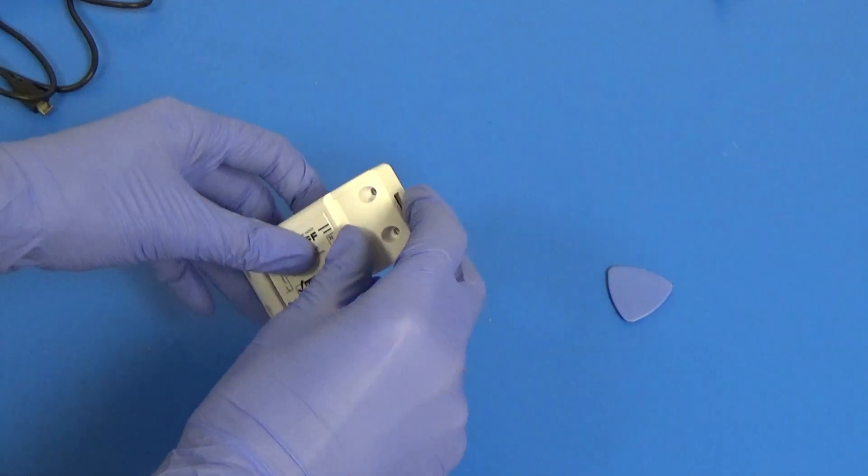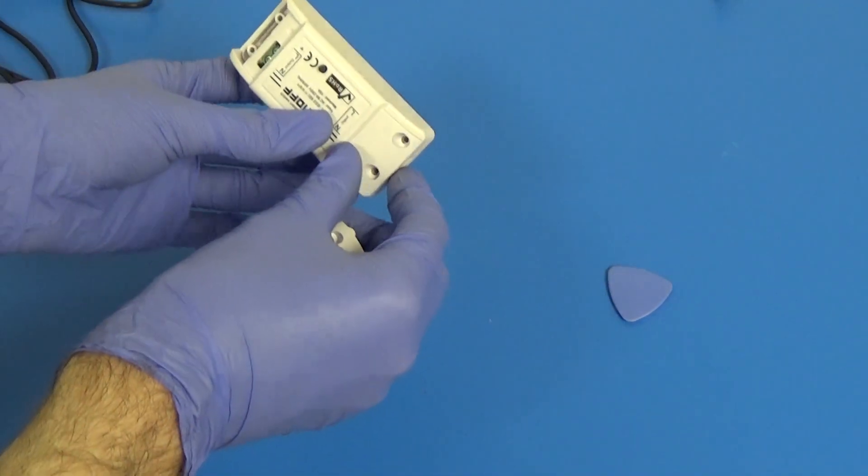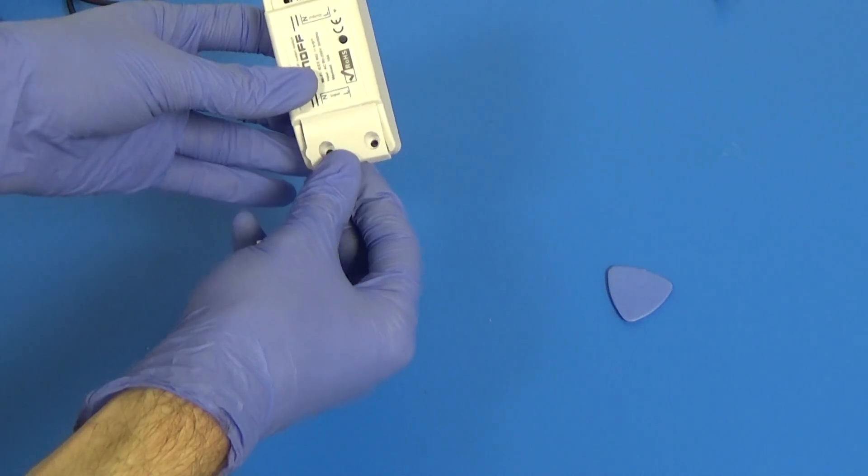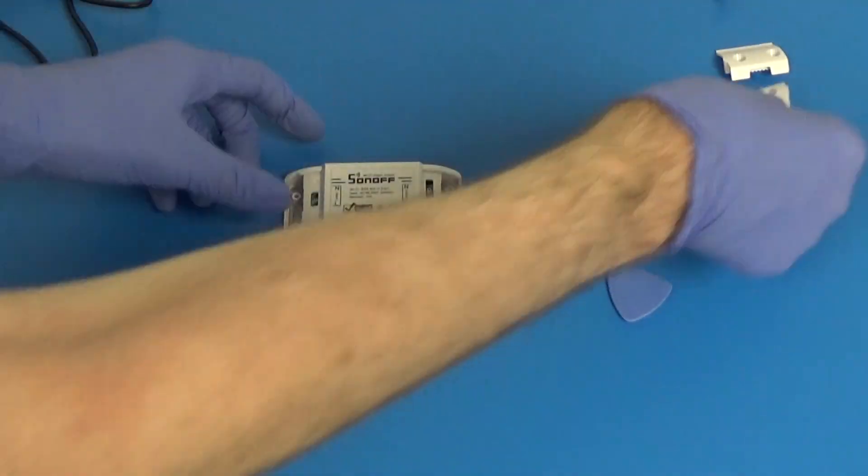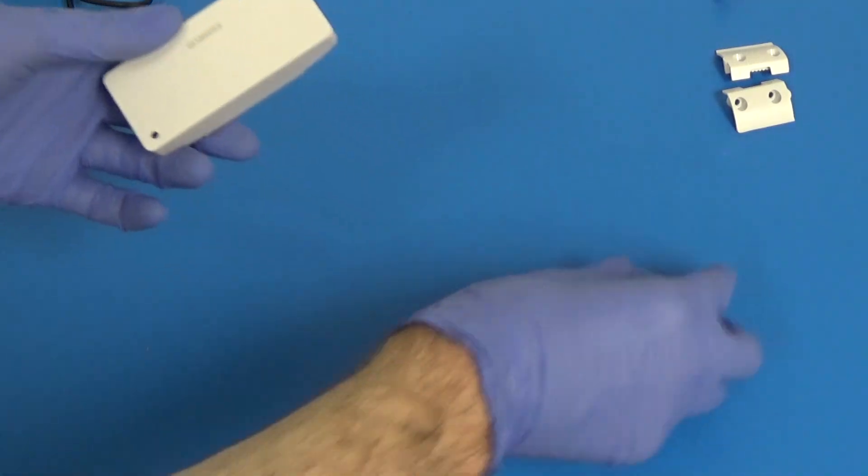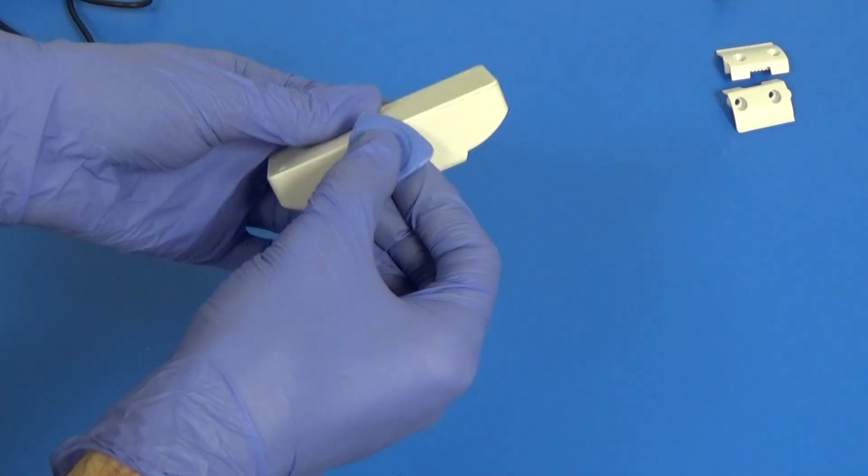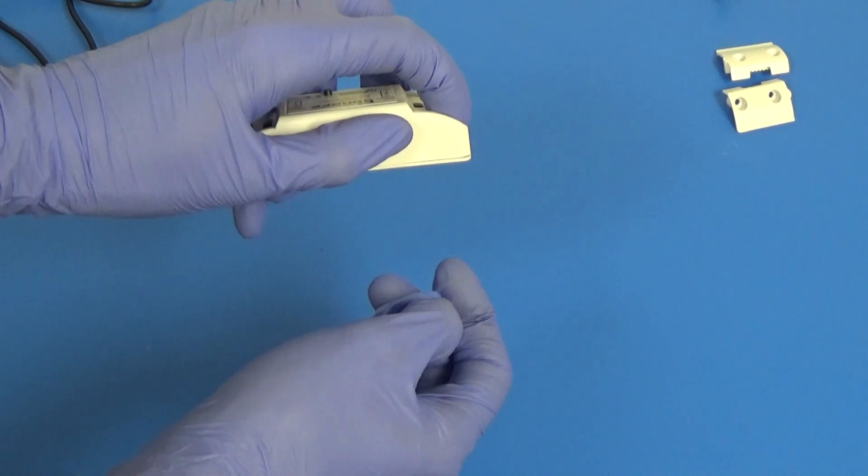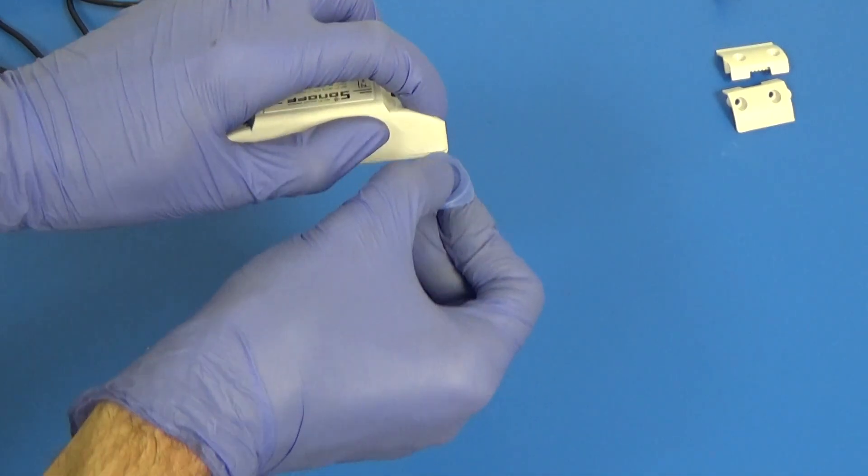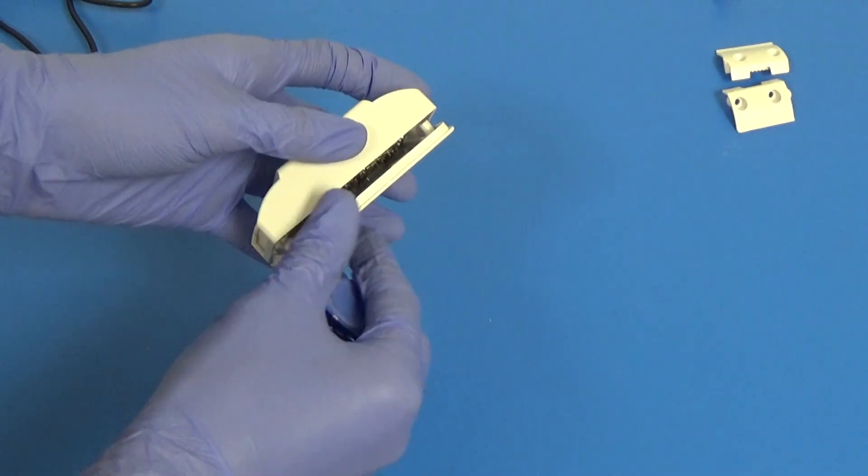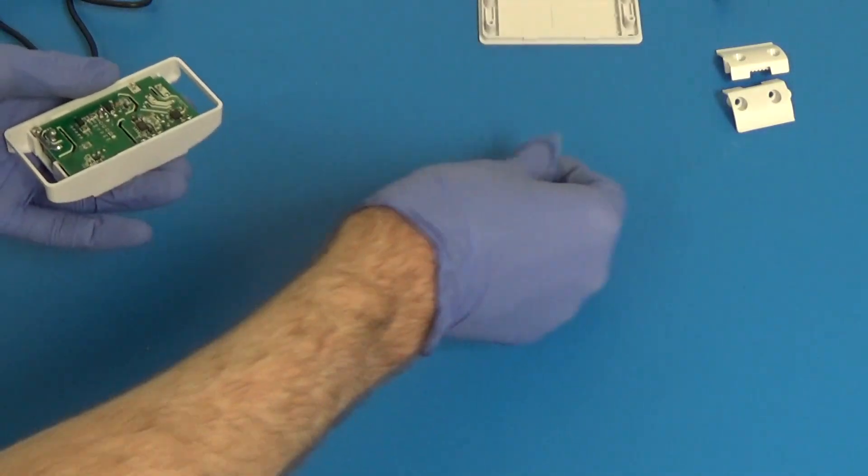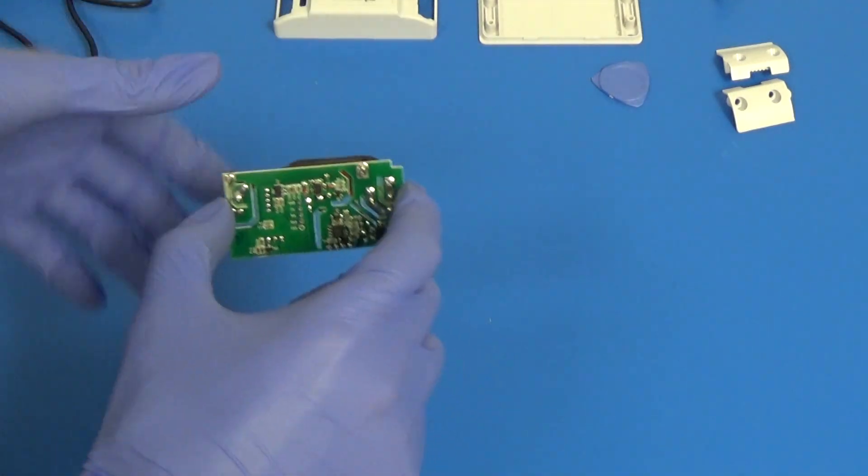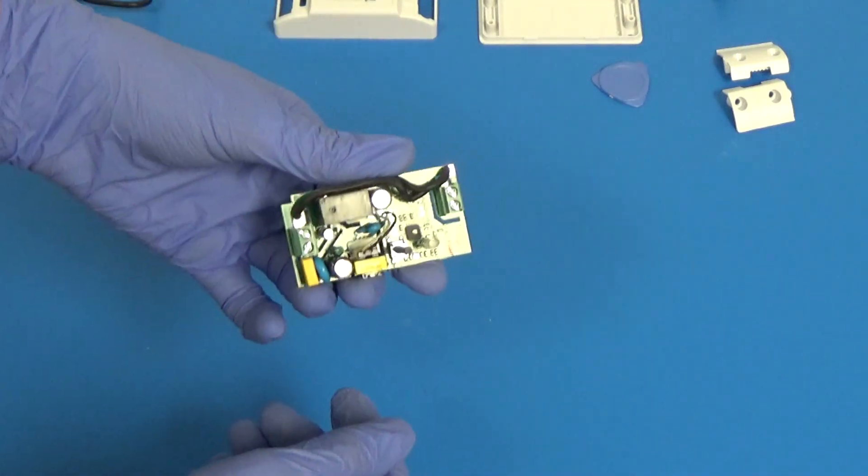So the first thing that we're going to want to do is remove these protective covers. They just come right off. They're not held in in any way. They're supposed to be screwed in afterwards, but from the box they're not. Now we need to use our pry tool to get into the side of the case. So find somewhere that there's a gap. If you push your finger down on the inside, it creates a bit of a gap. You just slide the tool in and then just slide it down like that and it just comes right open. So here is the inside of our Sonoff.